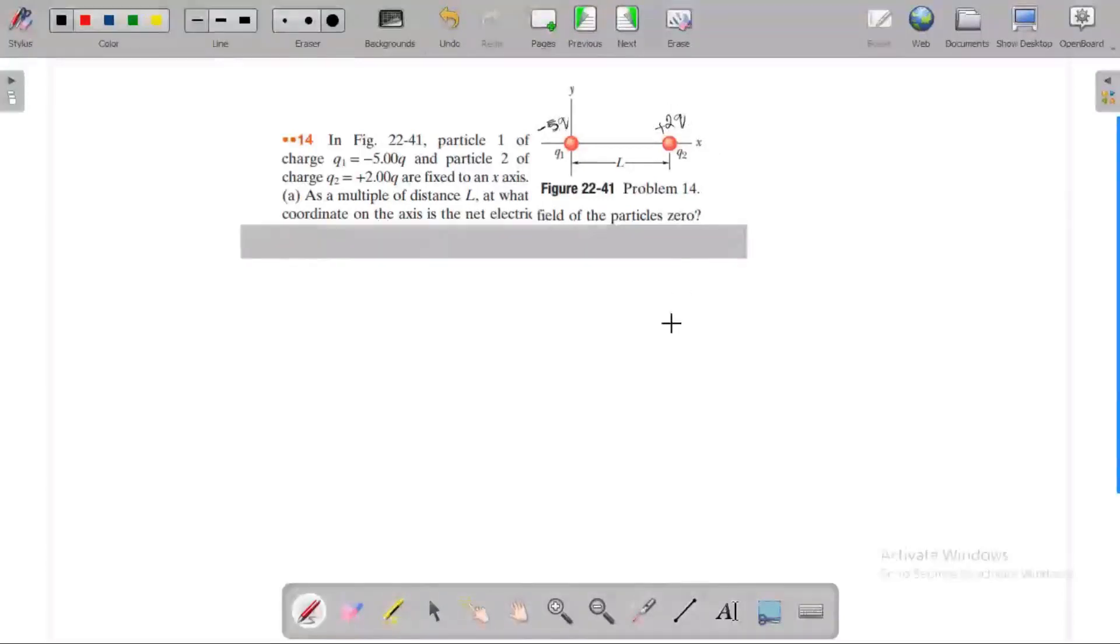In terms of Q, we need to find as a multiple of distance L, a coordinate on the axis where the net electric field at point P is zero.